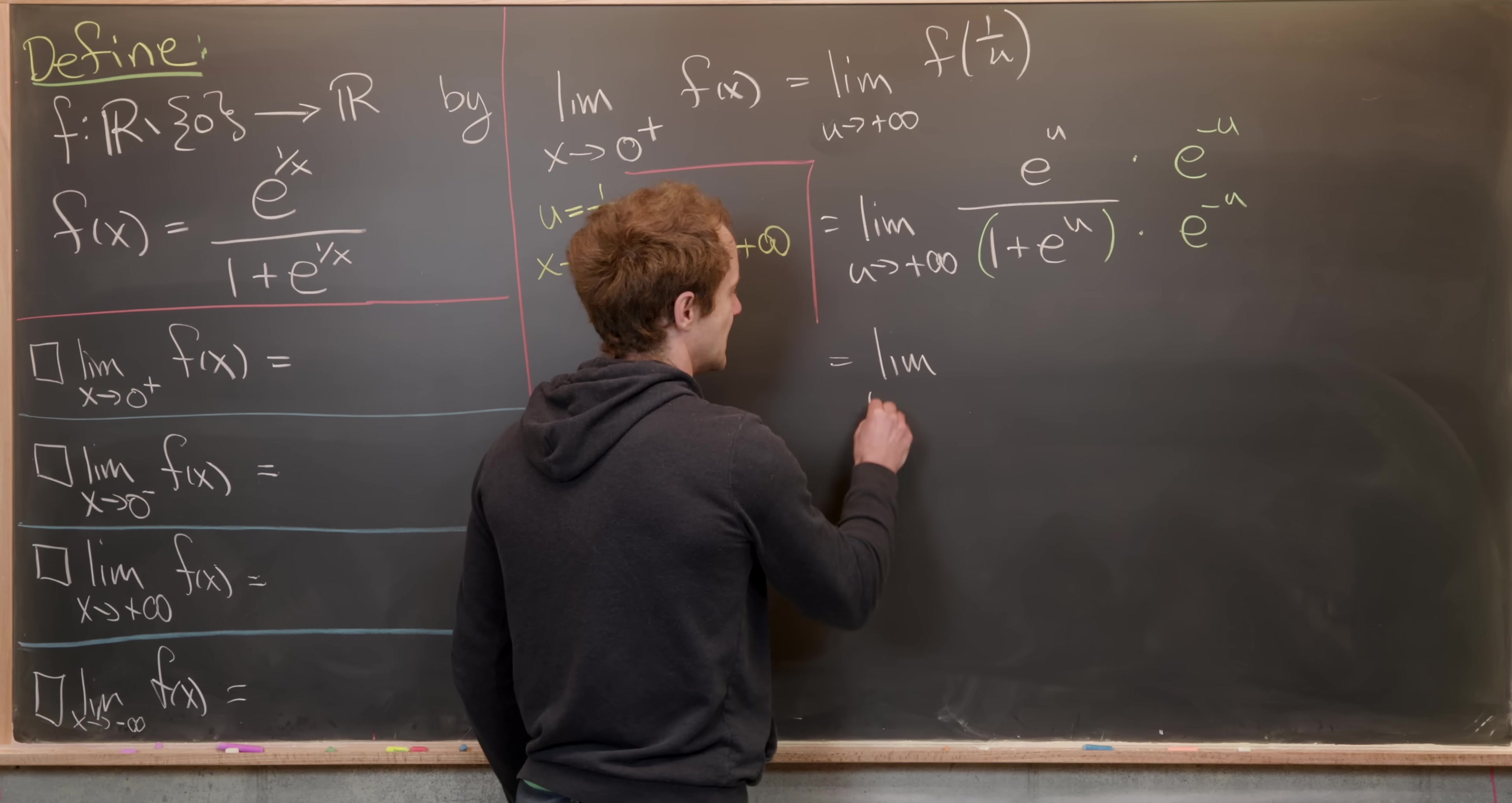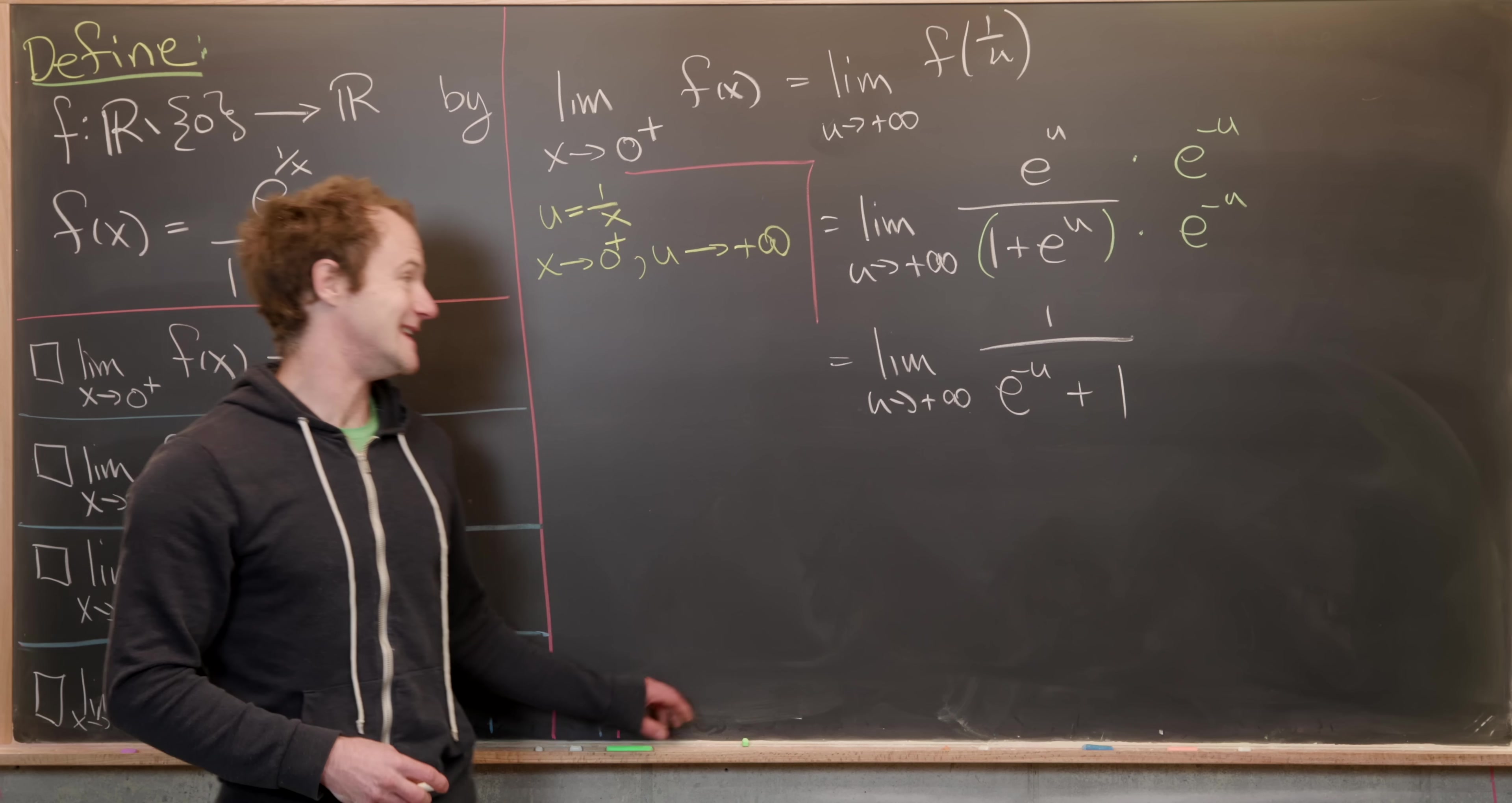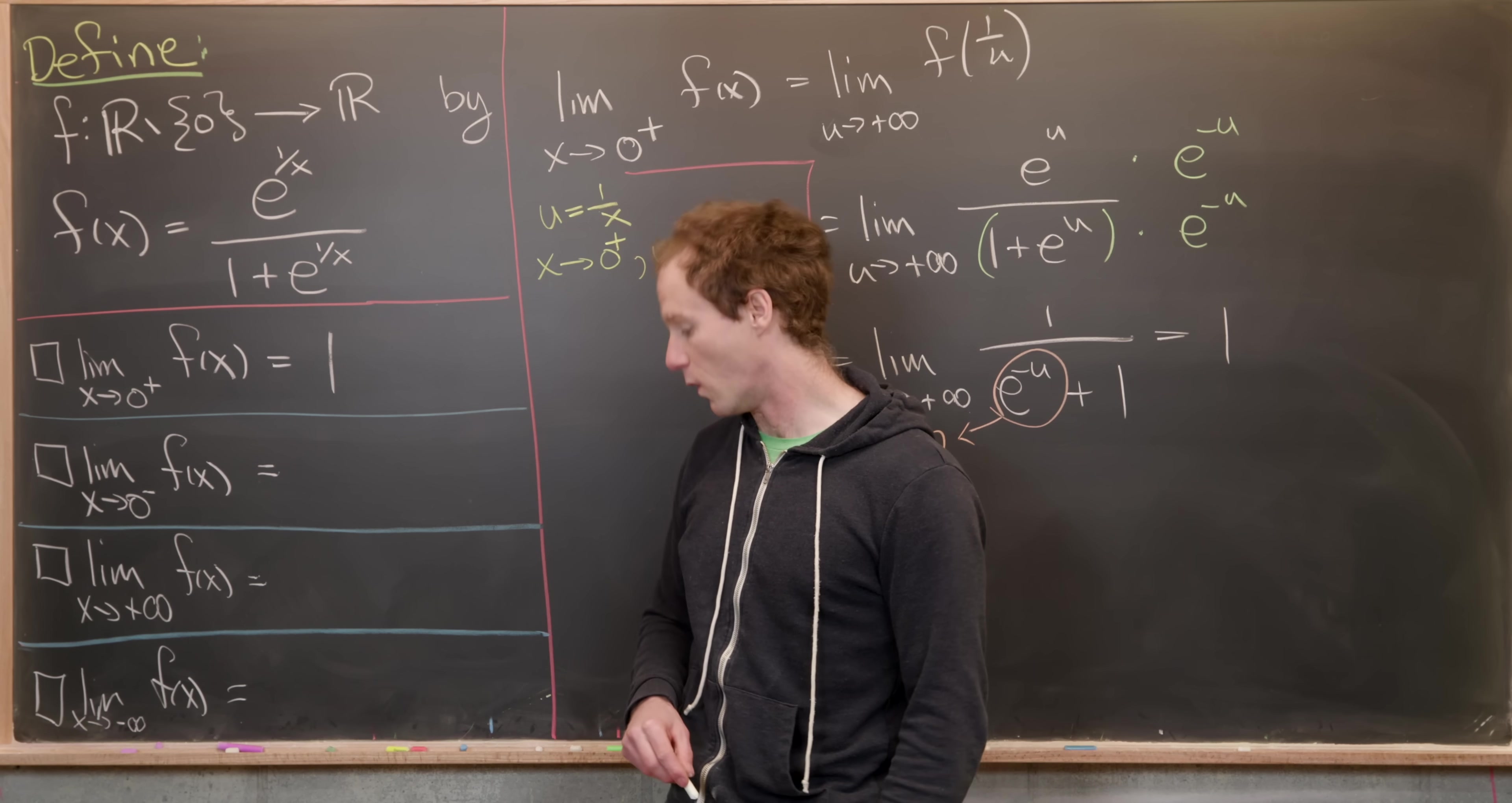So let's see what that gives us. So in the numerator, that gives us just the number one, given the fact that e to the zero is one. And in the denominator, we have e to the minus u plus one. Now, as u approaches plus infinity, minus u approaches negative infinity, which makes e to the minus u approach zero. So we've got this guy right here is zooming off towards zero, giving us this limit here is one over one, which is one. So we've got the value of this right handed limit at zero is one.